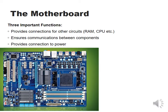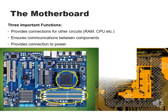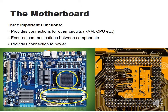The motherboard has three important functions. First, it provides connections for other circuits, such as the RAM and the CPU. Second, it ensures communication between the components. If you look at the back of the motherboard you can see all the little wires printed onto the circuit board — they're actually little copper wires covered in yellow plastic — and they allow communication between the CPU and other components. Third, the motherboard provides connection to power: the power supply plugs into the motherboard and then power travels through it to other components.